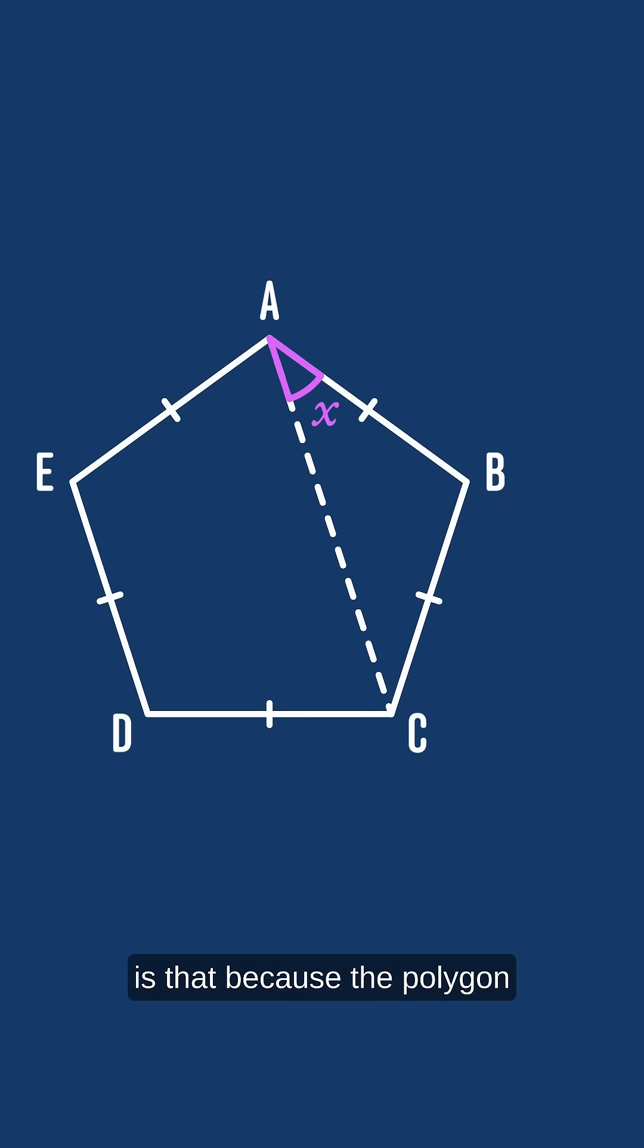The key for this problem is that because the polygon is regular all of its side lengths are equal and so actually all of its interior angles are equal too.